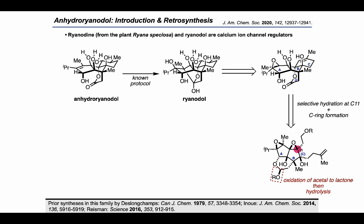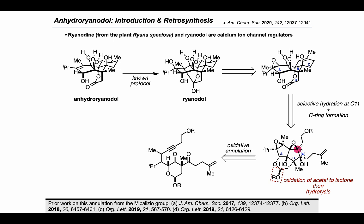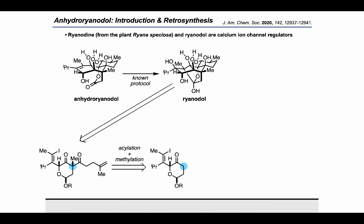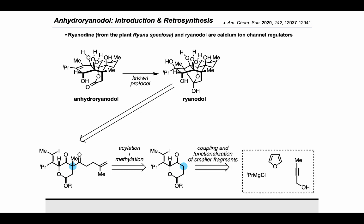Simplifying further, the authors proposed that this intermediate could arise from an oxidative annulation strategy they had previously developed. This intermediate was thought to be accessible from a palladium-catalyzed cross-coupling reaction with a vinyl iodide and an appropriate alkyne coupling partner. They then thought they might be able to get this type of diketone by performing an acylation and methylation on a substrate bearing a single ketone, which in turn might be reached by a combination of smaller fragments.